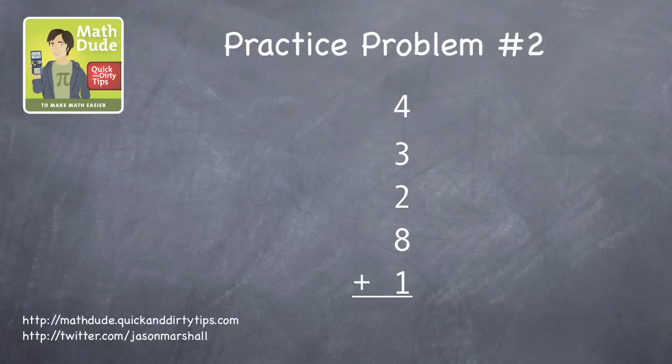Similarly in the second problem, look for pairs of numbers that add to 10. 8 and 2 is 10, but there are no other pairs. That's okay, there is an extra little quick and dirty tip for you.